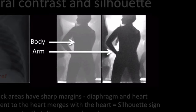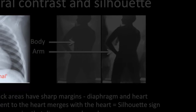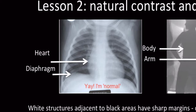I always tell students that you should be able to take a pencil and draw the outline of the heart and the outline of the diaphragm. The slide shows the cardiac margin and the diaphragmatic margin lying adjacent to very black, aerated, healthy lung. These margins — the silhouettes — are very clear and easy to see. When there's pathology, these margins become indistinct or are obliterated altogether.